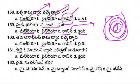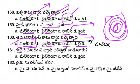Next question is about Anopheles mosquito. The options are Malaria, Filaria, Rabies, and Kshaya. Malaria is transmitted by the Anopheles mosquito. Filaria is transmitted by the Culex mosquito. Rabies is caused by a dog bite.